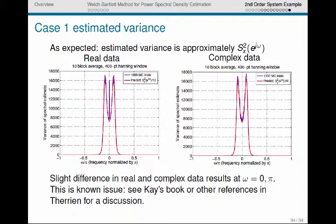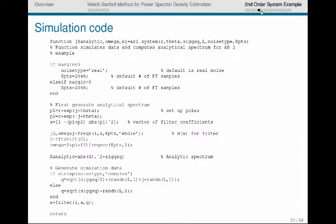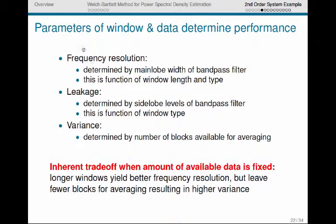Okay, so that finishes our second-order system example. And we can just go back here and summarize hopefully what we've learned, that the parameters of the window that we use for our window transform in Welch-Bartlett estimate, and the length of the data effectively determine the performance of the Welch-Bartlett estimator. The window length and type determine the frequency resolution and the leakage, and the variance is determined by the number of blocks we have available for averaging. So, I will provide the data or the MATLAB code on the website so that you can experiment with some more examples of this type. So, that's all, and thanks for listening.